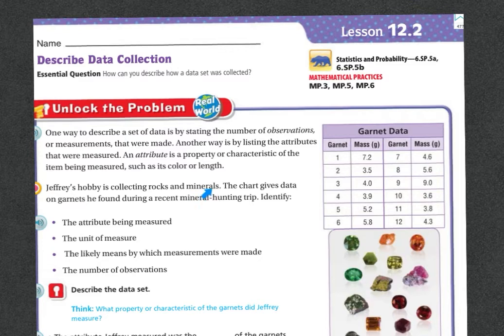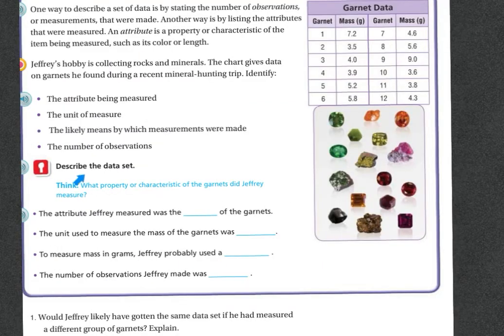Jeffrey's hobby is collecting rocks and minerals. The chart gives data on garnets he found during a recent mineral hunting trip. So here they are. First we're going to identify the attribute being measured, the unit of measure, the likely means by which measurements were made, and the number of observations.